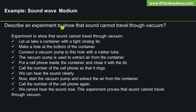Here we will describe an experiment to show that sound cannot travel through vacuum. Let us take a container with a tight closing lid. Make a hole at the bottom of the container and connect a vacuum pump to this hole with a rubber tube. The vacuum pump is used to extract air from the container. Put a cell phone inside the container and close it with the lid. Call the number of the cell phone so that it rings. We can hear the sound clearly.